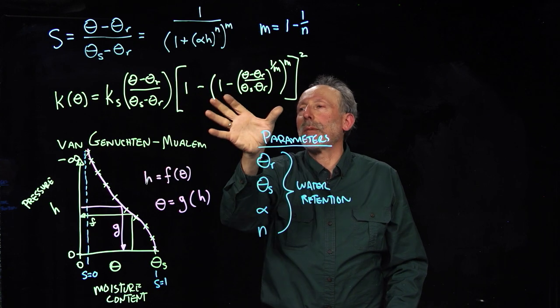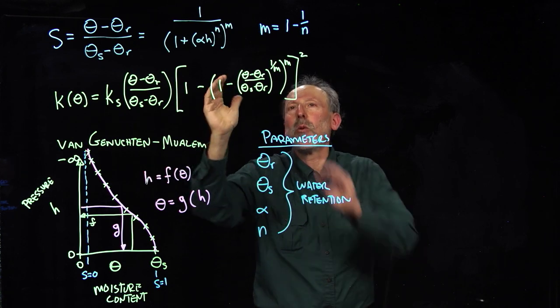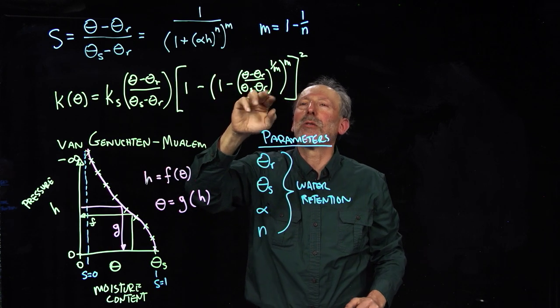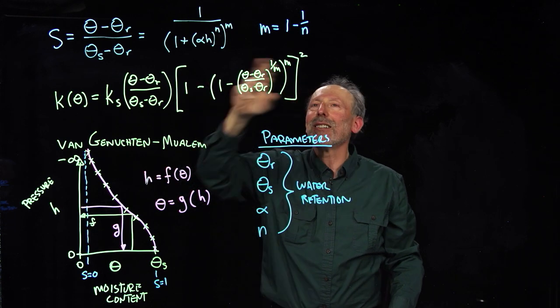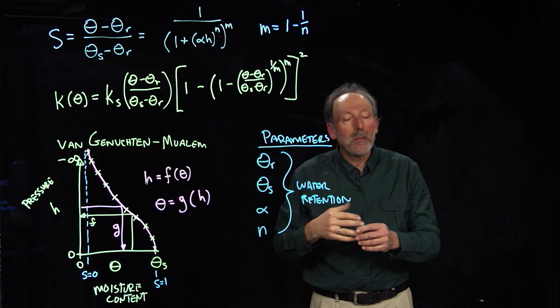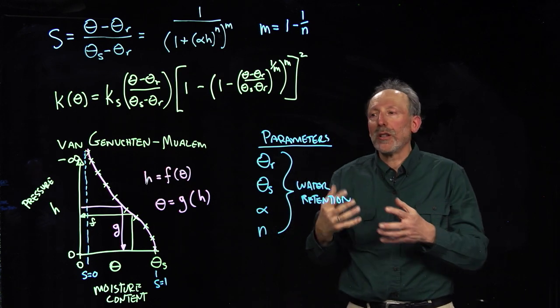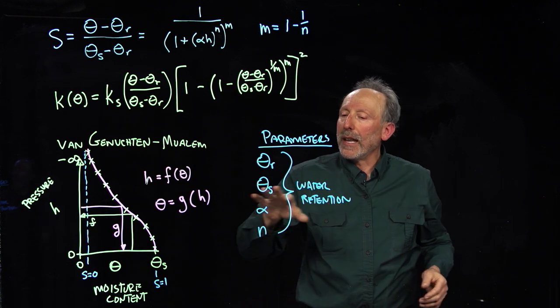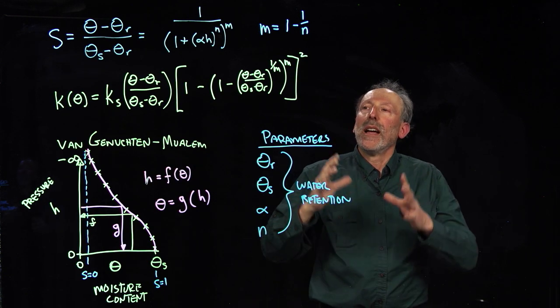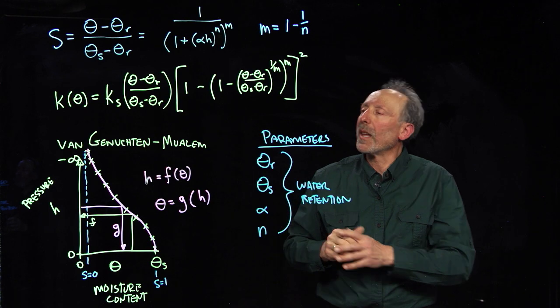And then times this expression, which is one minus the quantity, one minus degree of saturation, to the one over m power, this all taken to the m power, this all taken squared. And that really comes out of what's called the Poiseuille equation, where you're looking at what is the relationship between pore size, which n is related to, and resistance to flow.